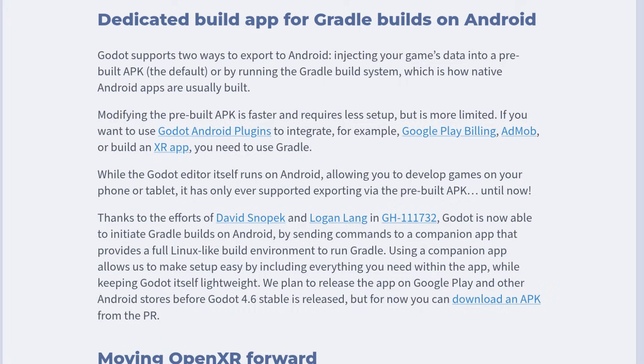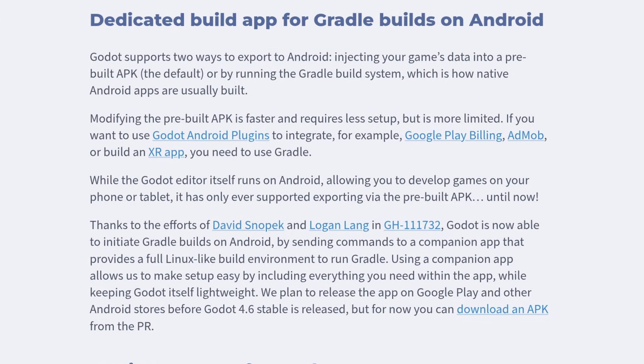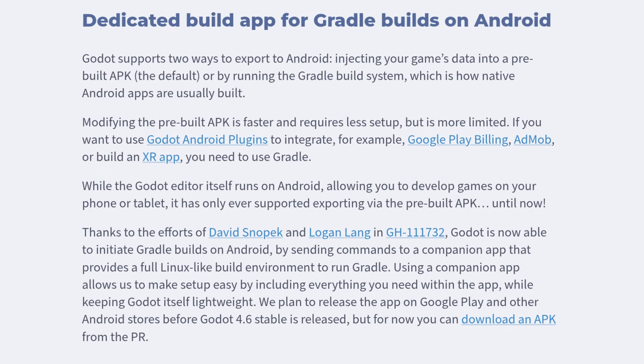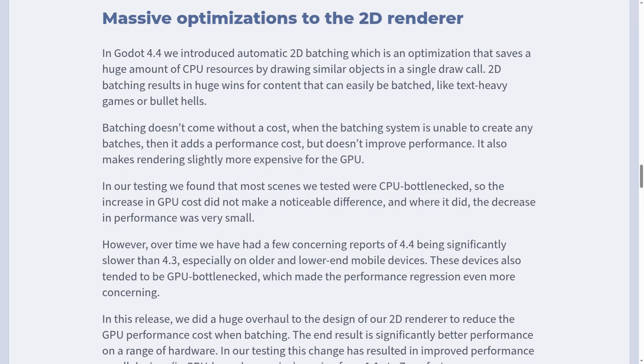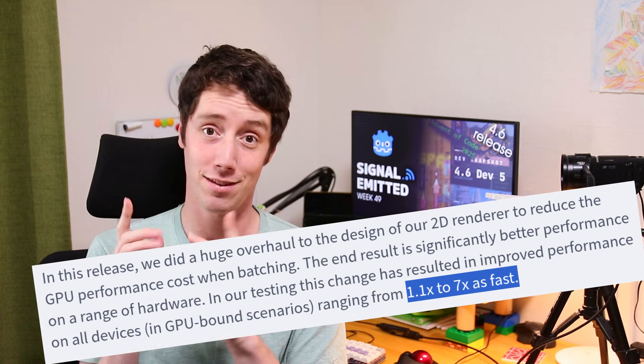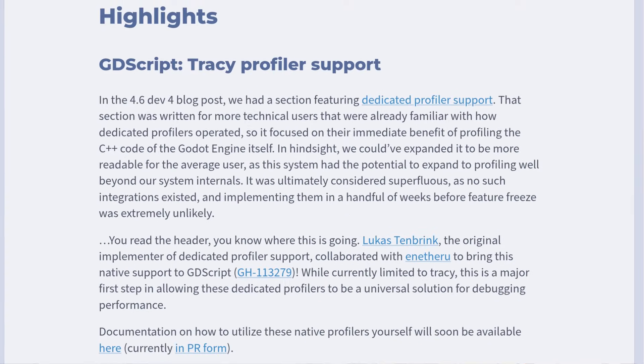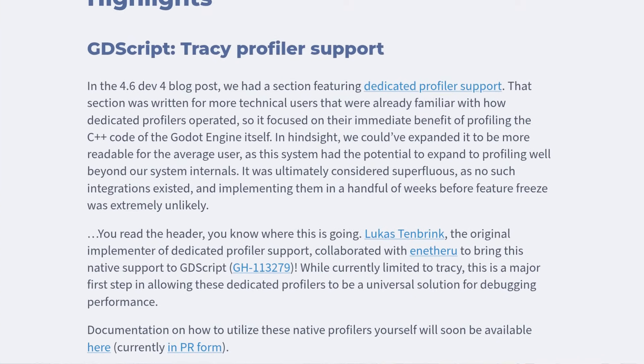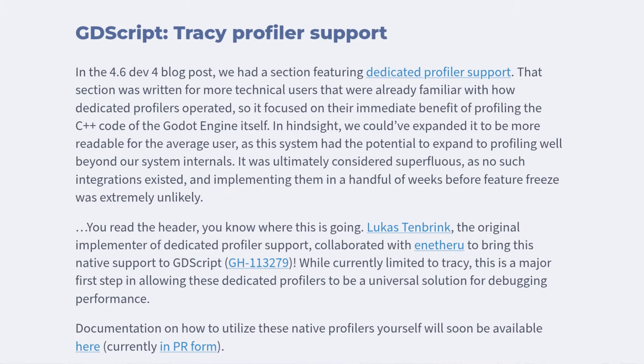Android Gradle builds can now be triggered directly from Android devices. There is also a big 2D rendering optimization which significantly improves GPU-bound performance, ranging from a performance boost of 1.1 times to 7 times as fast as before. And GDScript gets Tracy profiler support, enabling performance profiling for your projects to see where things are going wrong and what is taking a lot of memory.